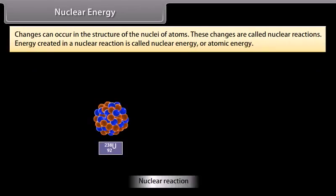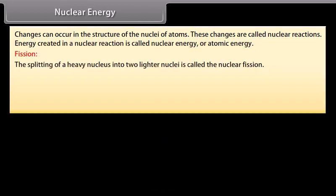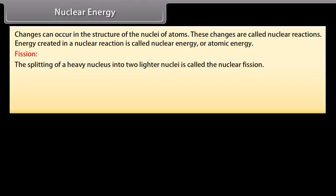Nuclear energy: Changes can occur in the structure of the nuclei of atoms. These changes are called nuclear reactions. Energy created in a nuclear reaction is called nuclear energy or atomic energy. Fission: The splitting of a heavy nucleus into two lighter nuclei is called the nuclear fission. When a slow neutron strikes a uranium-235 nucleus, it is absorbed by the nucleus and an unstable isotope of uranium U-236 is formed, which immediately breaks into two fragments, emitting two or three neutrons with release of enormous amount of energy. The reaction may be expressed as shown.